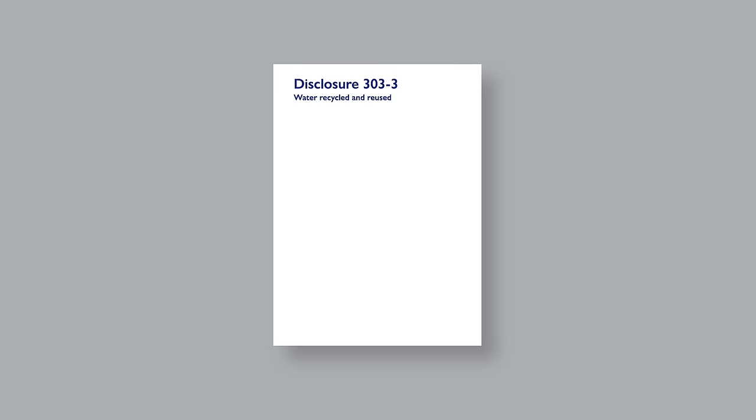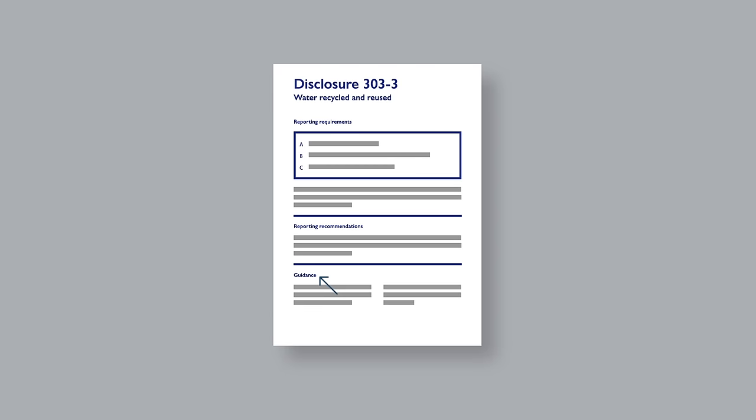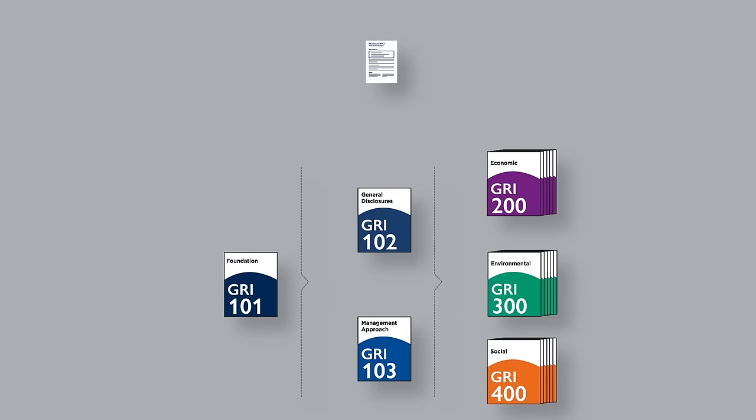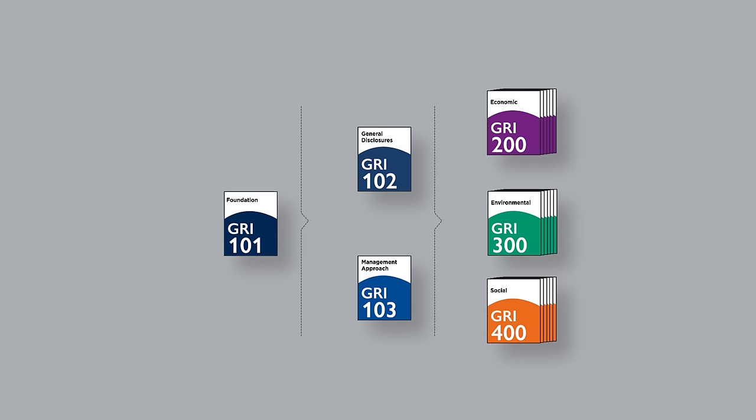Each GRI standard has a similar structure with clear distinctions between reporting requirements, recommendations, and guidance. This makes it easier to know what you need to report and how you need to report it.